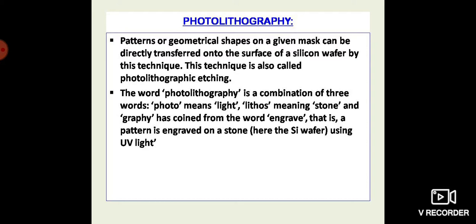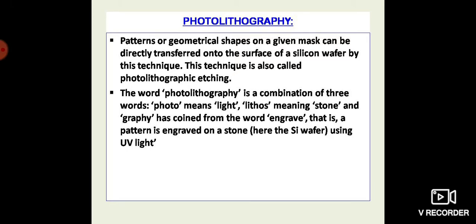Photolithography is a technique in which patterns or geometrical shapes on a given mask can be directly transferred onto the surface of a silicon wafer. This technique is also called photolithographic etching. The word photolithography is a combination of three words: photo meaning light, lithos meaning stone, and graphy coined from engrave. That is, a geometrical pattern is engraved on the silicon wafer surface using ultraviolet light.